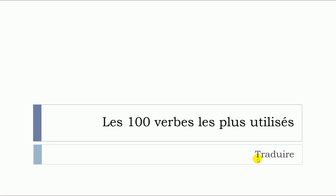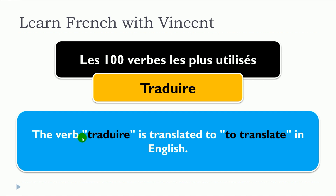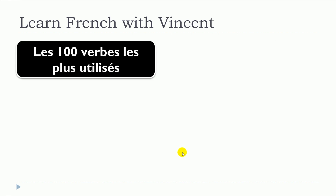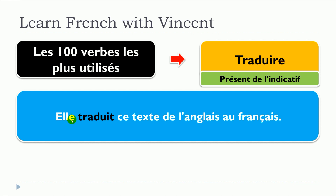In this lesson, we will see together the verb traduire. The verb traduire is translated to 'to translate' in English. So we will see some examples with traduire in présent de l'indicatif. Elle traduit ce texte de l'anglais au français.